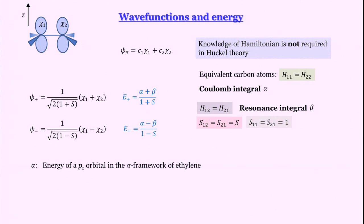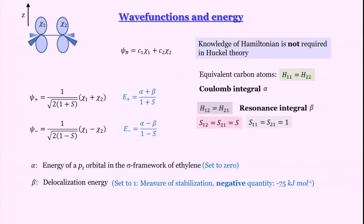Alpha is the energy of a pz orbital in the sigma framework of ethylene (assuming ethylene lies in the xy plane) — it represents the reference energy. Beta is the integral chi1·H·chi2, the interaction or delocalization energy. In Huckel MOT, alpha is set to 0 and beta to 1 (in units of beta). Experimentally, beta is found to be about minus 75 kJ/mol from spectroscopy. The overlap integral S is small, and in the simplest Huckel MOT, S is conveniently set to 0.